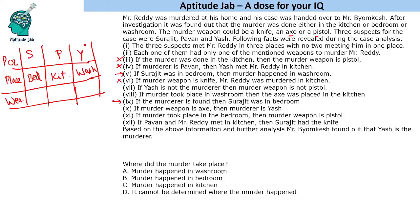We can confirm the murder took place in the washroom, but we do not yet know the weapon. Next, if Yash is not the murderer — but Yash is the murderer — so that condition is false and we ignore it. Another statement says if murder took place in the washroom, then the axe was placed in the kitchen. Since that is true, axe was in the kitchen, meaning Pavan had the axe.